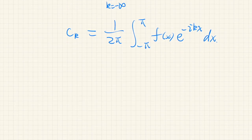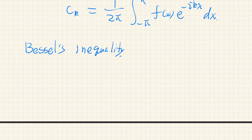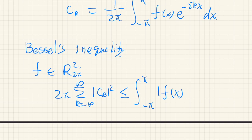First, we prove Bessel's inequality: if f is square integrable, then 2π times the sum of the absolute value squared of the Fourier coefficients is less than or equal to the integral of the square modulus of f. Let's prove this.